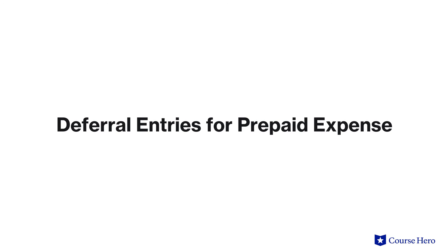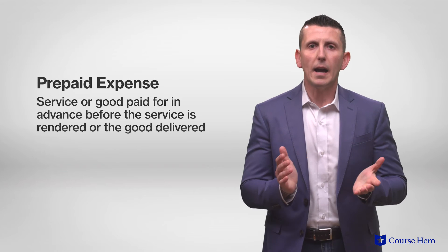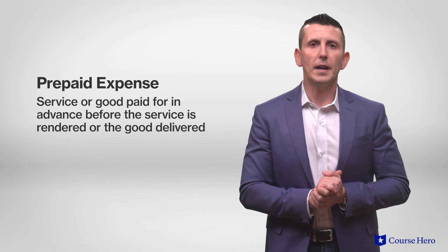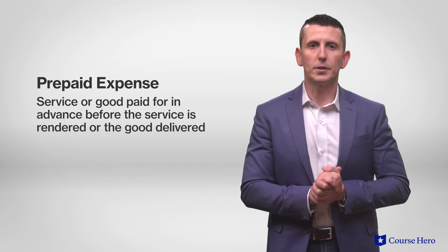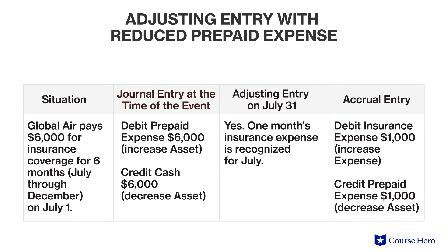The adjusting entry affects both an income statement account and a balance sheet account. Prepaid expenses are exactly that — services or goods paid in advance before the service is rendered or the good delivered. A prepaid expense often happens in the case of purchasing insurance coverage. For example, on July 1st, Global Air pays $6,000 as a prepaid expense for insurance coverage for the six-month period from July through December.